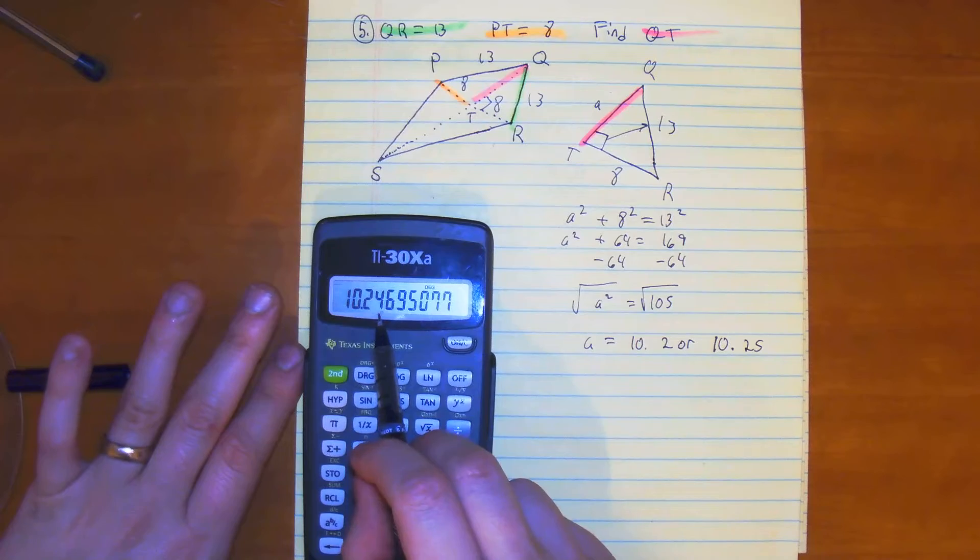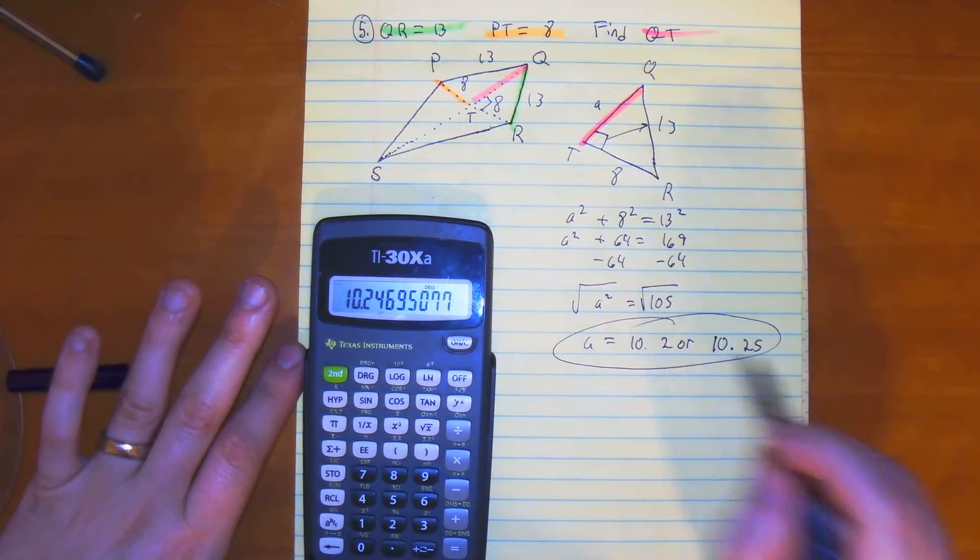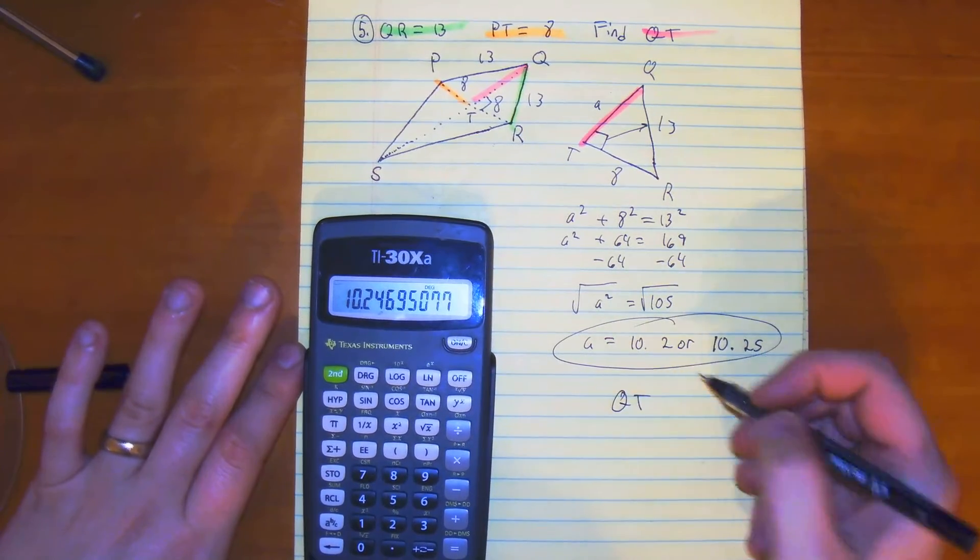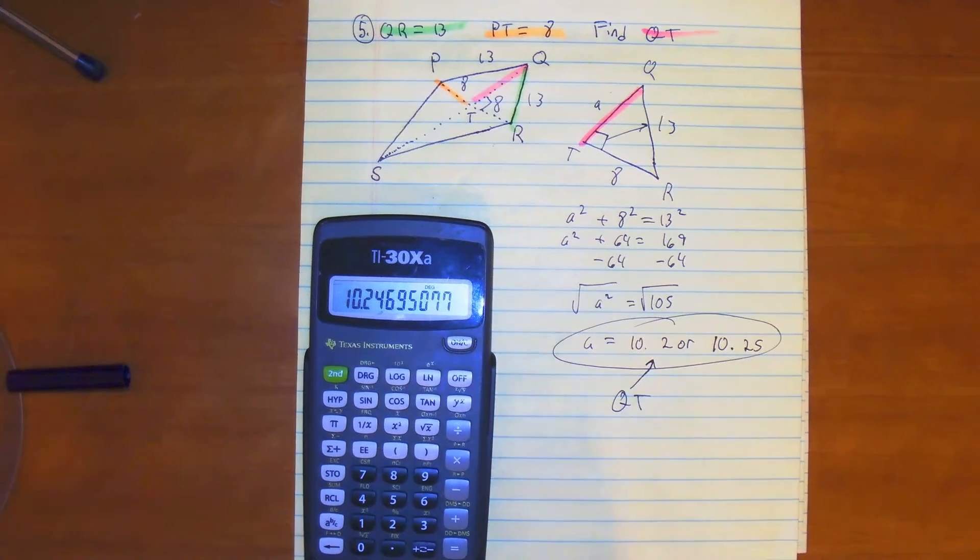If we do the hundredth place, the 4 rounds up. So a is equal to 10.2, which means that whatever you choose, the tenth or hundredth place, depending on how the question is phrased, that's what QT should be, is about 10.2 or 10.25. Goodbye.